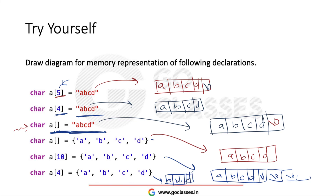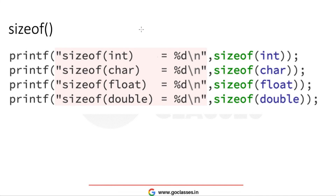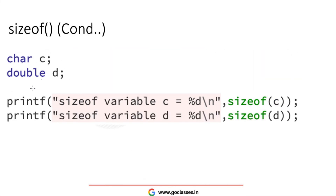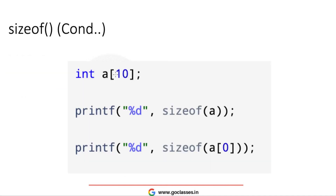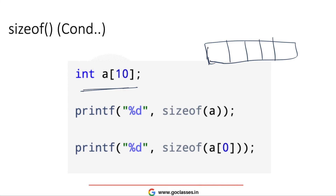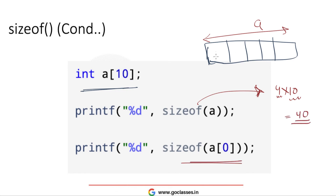Now let's see the size of these types. Assuming integer is 4 bytes, character is 1 byte, float is 4 bytes, and double is 8 bytes on our system. If you declare int a[10], then sizeof(a) gives the size of the complete array, which is 4 × 10 = 40 bytes. But sizeof(a[0]) gives just 4 bytes — the size of one integer.